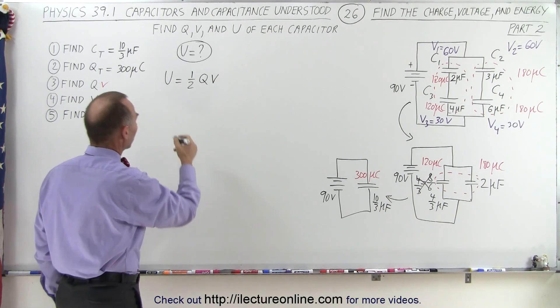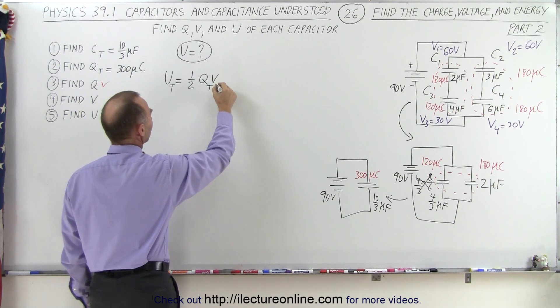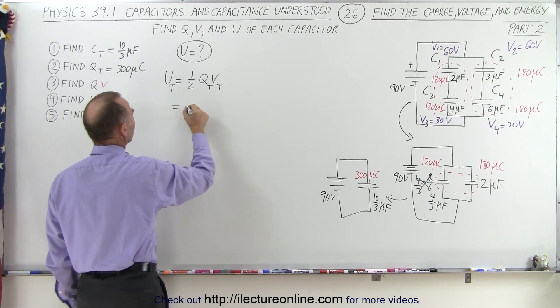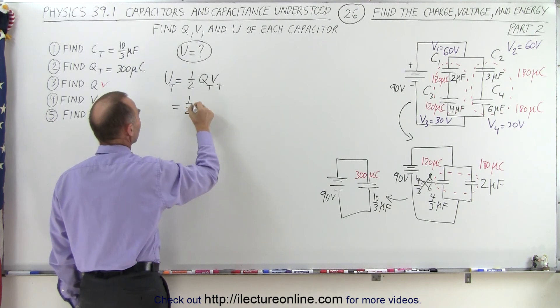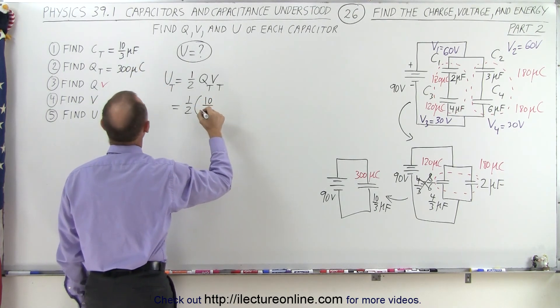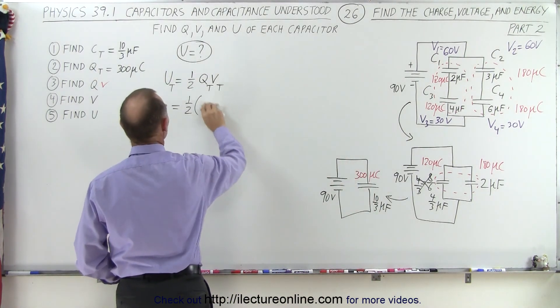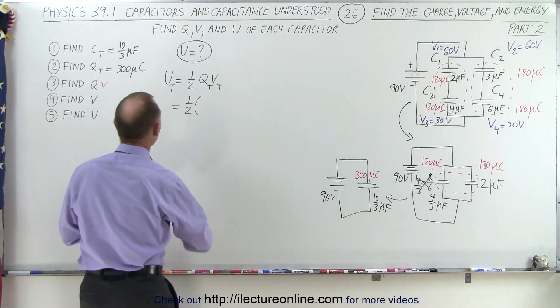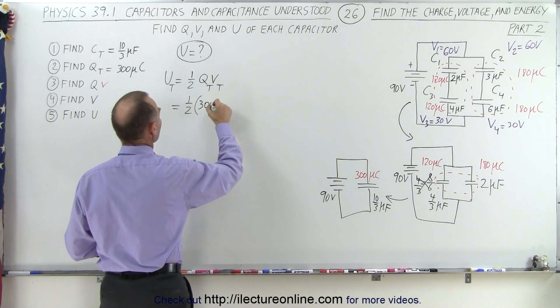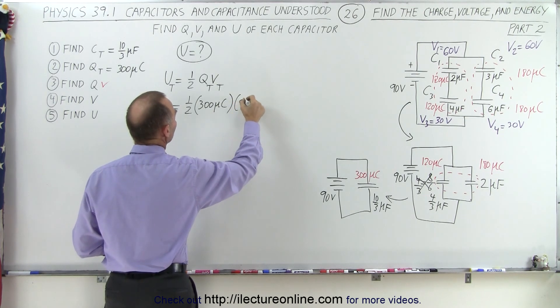In this case, since we want to find the total energy of the whole circuit, we need the total charge times the total voltage. So this is equal to one-half. The total charge we found to be... oh, charge, not capacitance. The total charge was 300 microcoulombs times the voltage of 90 volts.